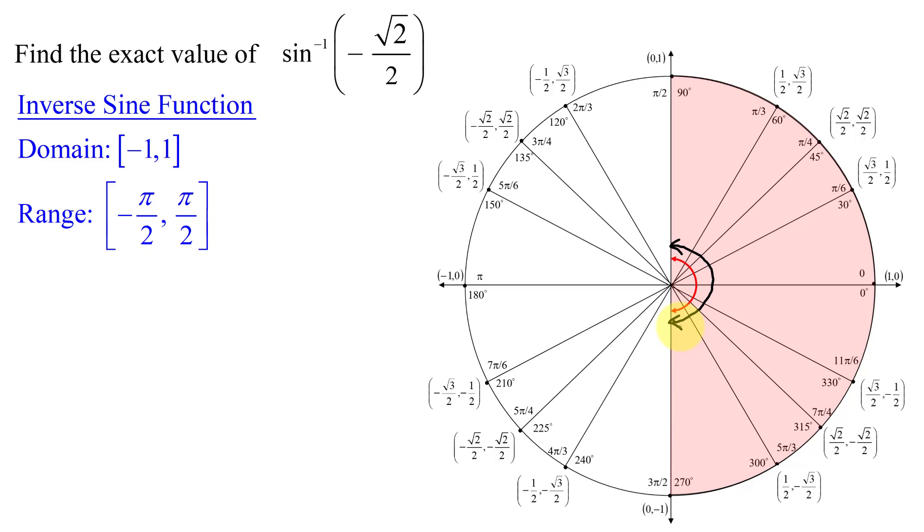When you first start working on these problems, it's often easier to set your inverse trig function equal to a variable. I'm going to pick theta, since I'm looking for an angle, and then just translate this. What does this mean?